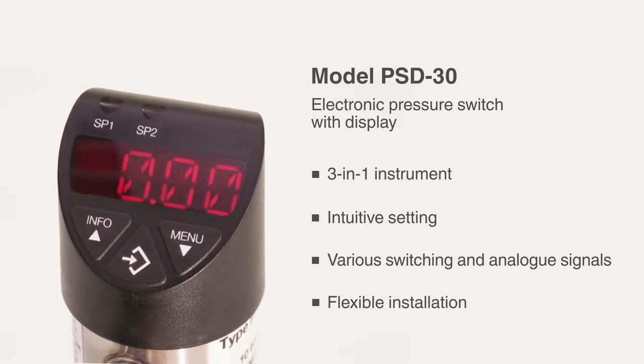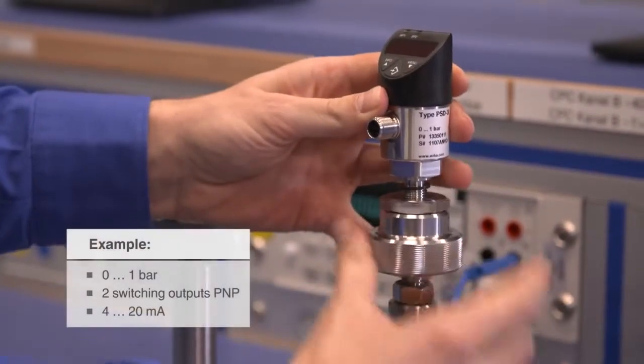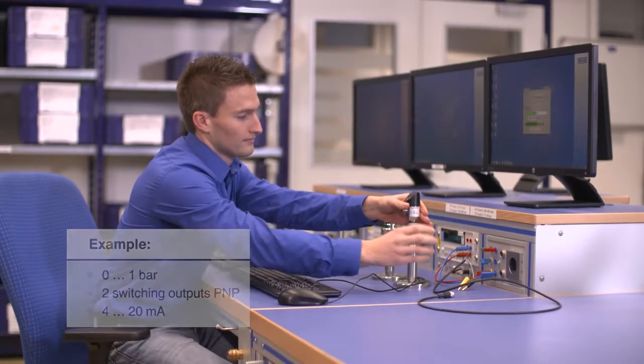Alongside one or two switching outputs, the PSD30 offers an optional output signal of 4 to 20 mA or 0 to 10 V. Additionally, communication can be made via IO-Link.